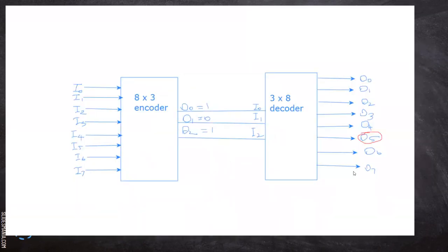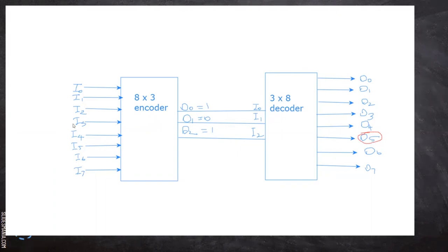Now we will see how the encoder and decoder are actually used together. An 8-by-3 encoder combined with a 3-by-8 decoder: the encoder has 8 inputs and 3 outputs, and the decoder has 3 inputs and 8 outputs. For example, if I want to select the fifth line, the encoder produces the combination 1,0,1, which is then given as input to the decoder, which selects output line I5.